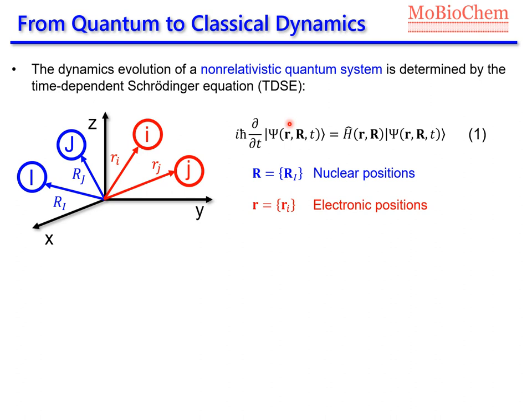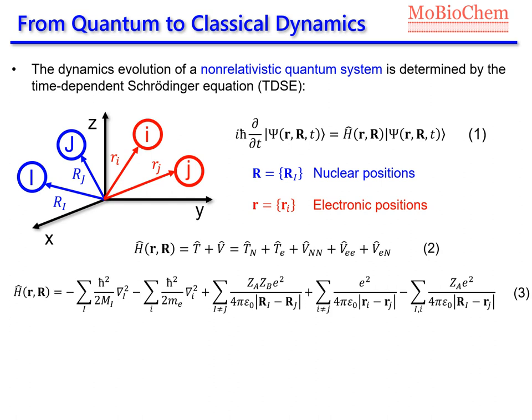This is equation number 1, where we have the imaginary number i multiplied by the reduced Planck constant multiplied by the time evolution of the total wave function, equal to the Hamiltonian of the system multiplied by the total wave function. The wave function depends on the electron coordinates, the nuclear coordinates and the time, while the Hamiltonian depends on nuclear and electronic coordinates. The Hamiltonian can be written as the sum of kinetic energy plus potential energy, where the kinetic energy presents two contributions: the nuclear kinetic energy plus the electronic kinetic energy. The potential energy presents three terms: the nuclear repulsion, the electronic repulsion, and the electron-nuclear interaction.